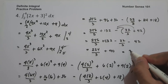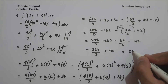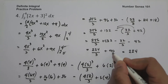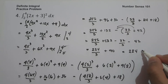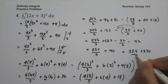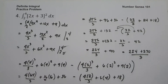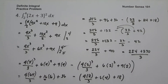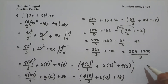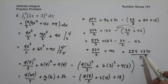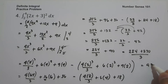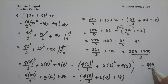Converting 90 to thirds: 90 times 3 is 270 over 3. Adding the fractions: 224 over 3 plus 270 over 3 equals 494 over 3. This is our final answer.